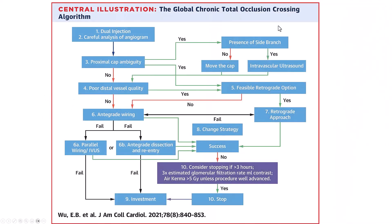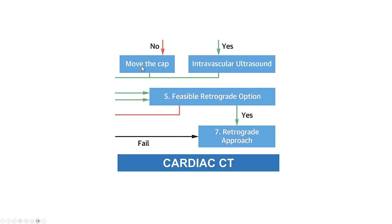So we have a situation in which we have an ambiguous proximal cap, which is one of the first steps when assessing the angiogram in patients with coronary CTOs. There are different ways to get around this. We can do either dissection reentry techniques, the move-the-cap techniques, we can use IVUS in a side branch, or another option is to go retrograde or do a cardiac CT to clarify the ambiguity.